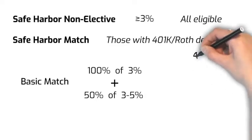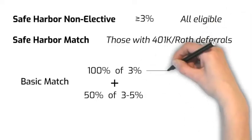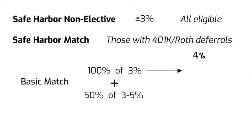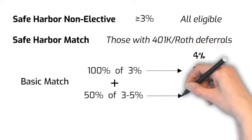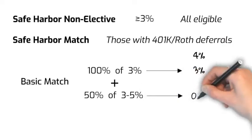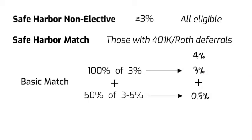if an employee contributes 4% of their plan compensation to their 401k, the employer needs to match 100% of the first 3%, which is 3%, and 50% of the remaining 1%, which is half percent, and therefore the total Safe Harbor match for this employee is 3.5% of their compensation.